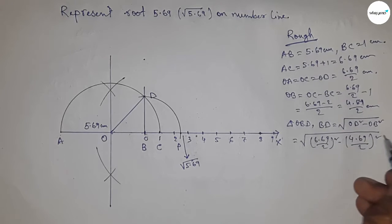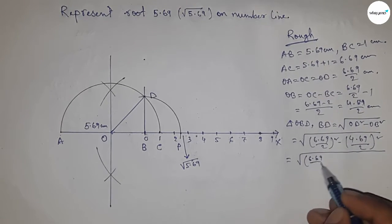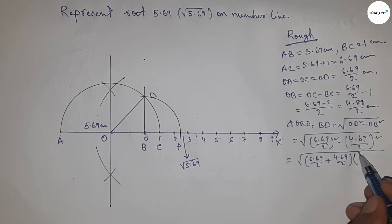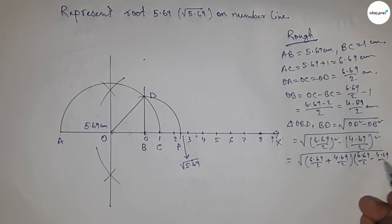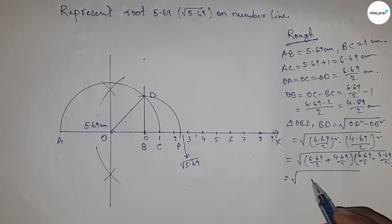So now putting the value of OD and OB, and now I'm going to use a formula a square minus b square equal to a plus b. So here first applying the formula a plus b and a minus b equal to a square minus b square.